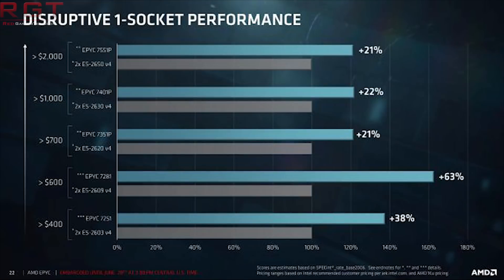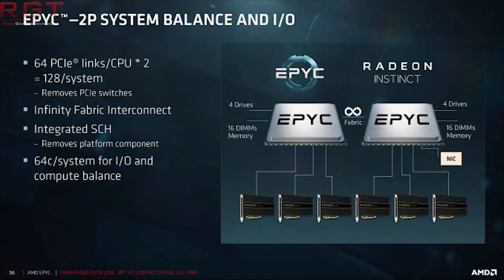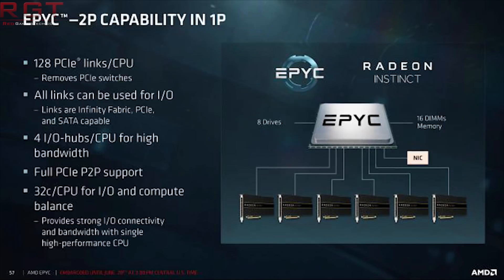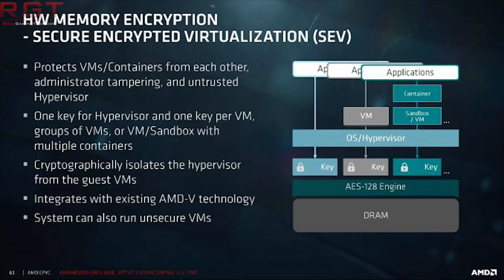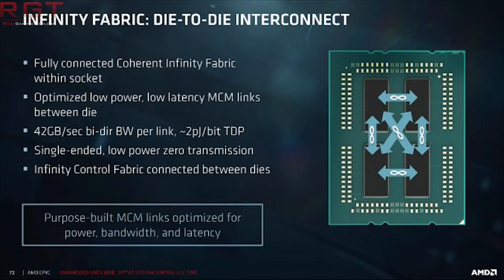I'm sure some of you are nodding your heads going, those are some words you just said — care to explain? Well, basically what the initial QoS functionality is for is L3 cache allocation enforcement, L3 cache occupancy monitoring, and L3 code data prioritization, as well as memory bandwidth enforcement and allocation.